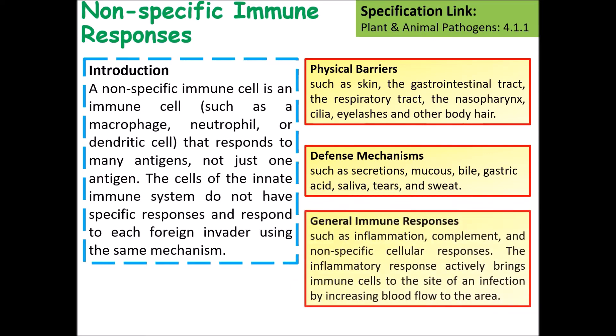There are also some general immune responses, such as inflammation or compartmentalizing pathogens so they can no longer spread further. Inflammation works because it increases blood flow to that area, and pathogens will most often only reproduce at a very specific temperature.